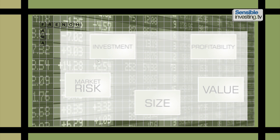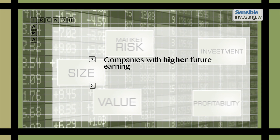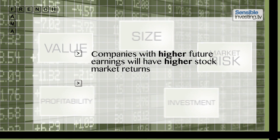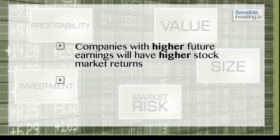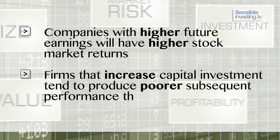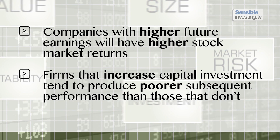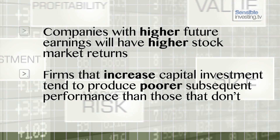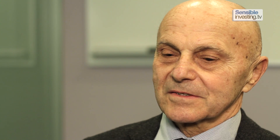Companies with higher future earnings will have higher stock market returns. And perhaps surprisingly, firms that increase capital investment tend to produce poorer subsequent performance than those that don't. In fact, those two factors — profitability and investment — actually explain the value factor, so you can drop the value factor and use a four-factor model.